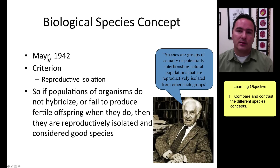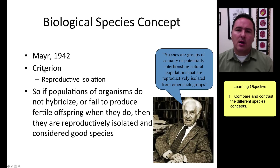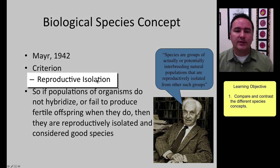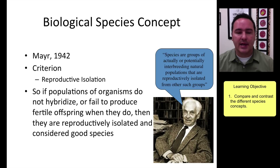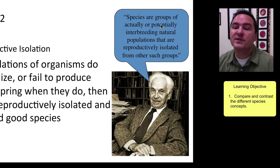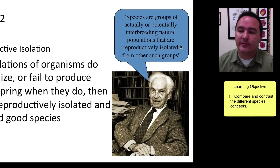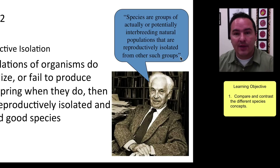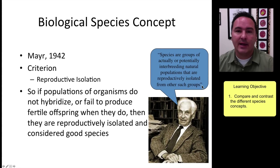The biological species concept was developed by Ernst Mayr in 1942. The basic criteria is that as long as two populations are reproductively isolated, those two populations should be considered separate species. He even said: 'Species are groups of actually or potentially interbreeding natural populations that are reproductively isolated from other such groups.'